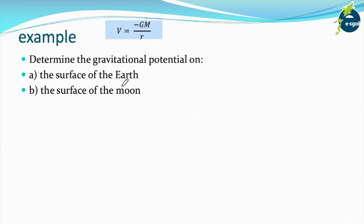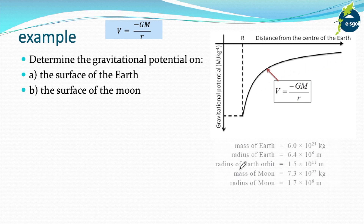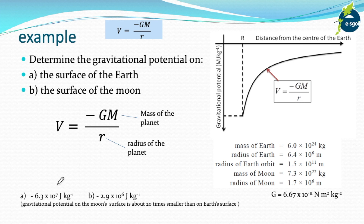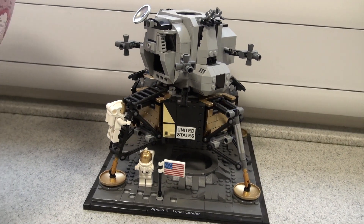A big example: the gravitational potential on the surface of the Earth and the surface of the Moon. Gravitational potential is a maximum negative value when you're at the surface of a planet, and then it becomes less negative as you move away. Subbing in the values — M is the mass of the planet, R is the radius of the planet — the gravitational potential at the surface of the Earth is minus 6.3 times 10 to the 7, and on the Moon it's minus 2.9 times 10 to the 6. So it's about 20 times smaller on the Moon than on the Earth — you'd have to do a lot less work to get an object off the surface of the Moon.